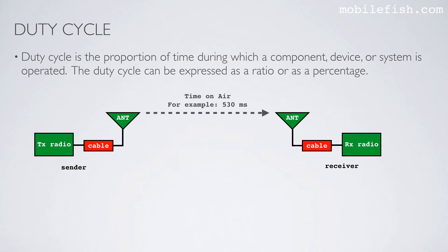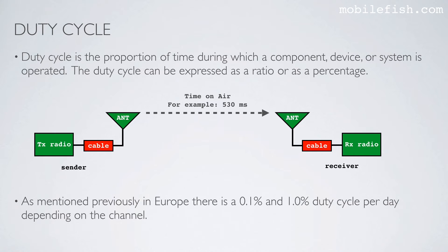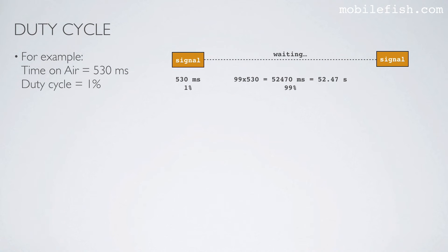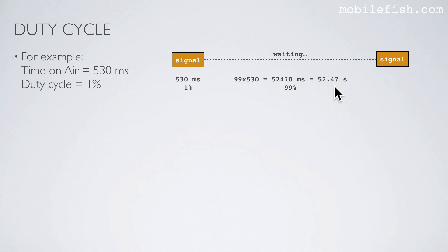Duty cycle is the proportion of time during which a component, device, or system is operated. The duty cycle can be expressed as a ratio or as a percentage. As mentioned previously, in Europe there is a 0.1% and 1% duty cycle per day depending on the channel. For example, time on air is 530 milliseconds and the duty cycle is 1%. So the 530 milliseconds equals 1%, meaning 99% of the time — which is 52.47 seconds — is the amount of time you have to wait after you have sent a signal. After waiting 52.47 seconds, you can broadcast the same signal again.